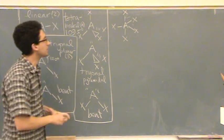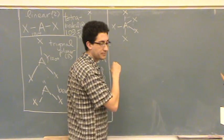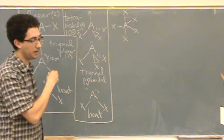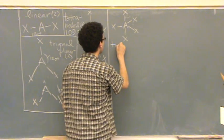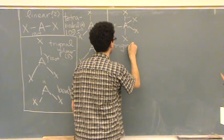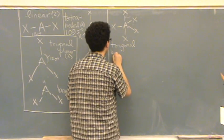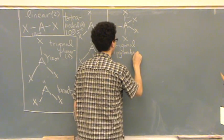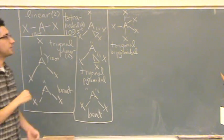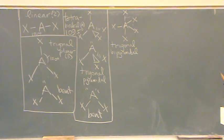So this is called, there's going to be a lot of these, this is called trigonal bipyramidal. Trigonal bipyramidal. The triangle is the middle of it, and then it looks like there's a pyramid on top and on bottom.